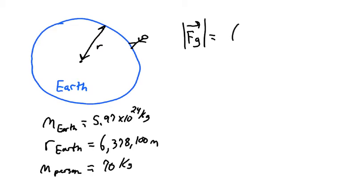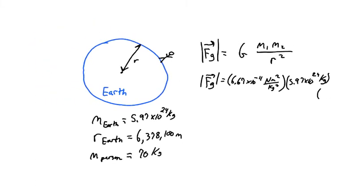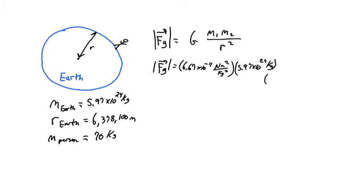So force of gravity equals G m1 m2 over r squared. So our force of gravity, the magnitude of that, is going to be 6.67 times 10 to the negative 11th Newton meters squared per kilogram squared. That's the gravitational constant. It's on your brain sheet. The mass of the earth is 5.97 times 10 to the 24th kilograms times the mass of the person is 70 kilograms.